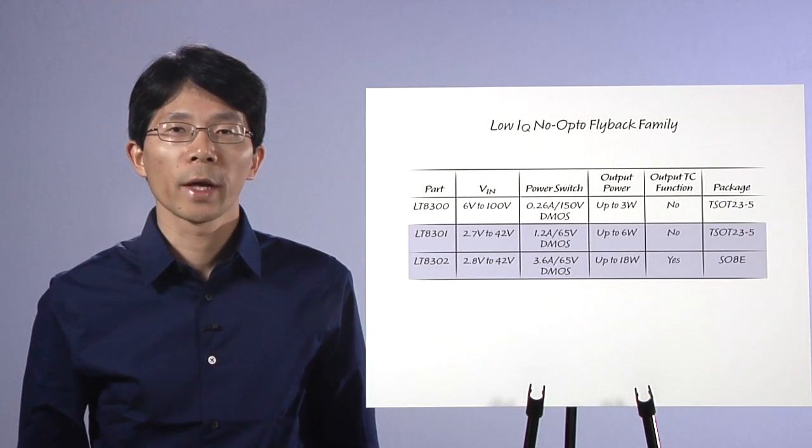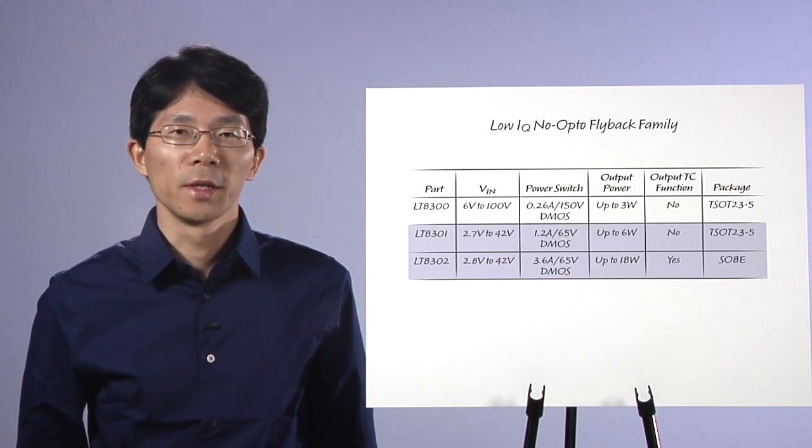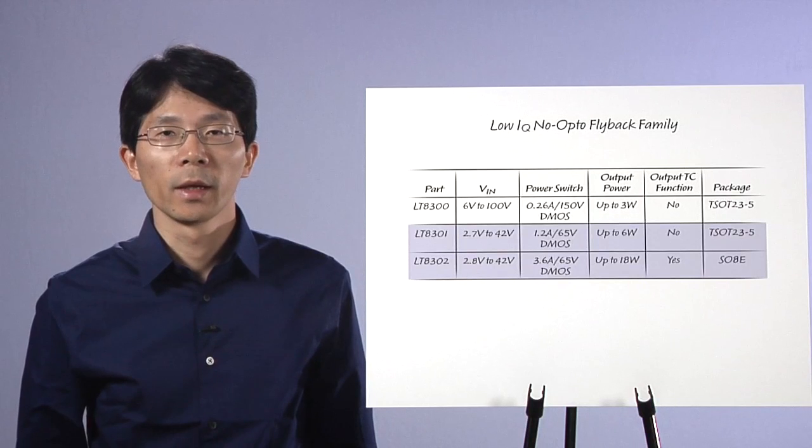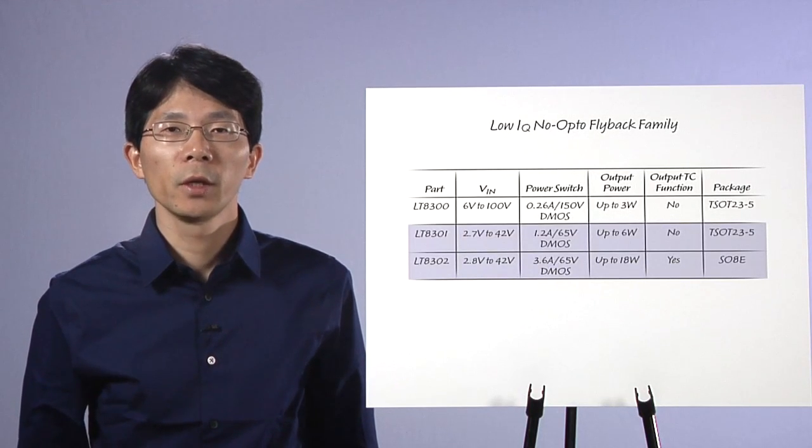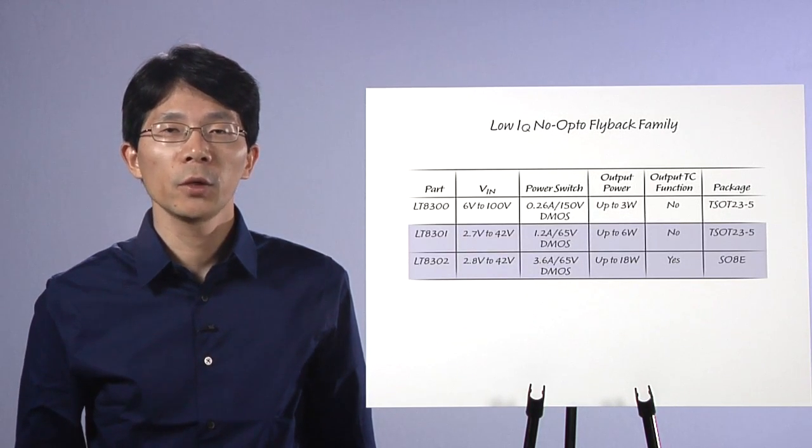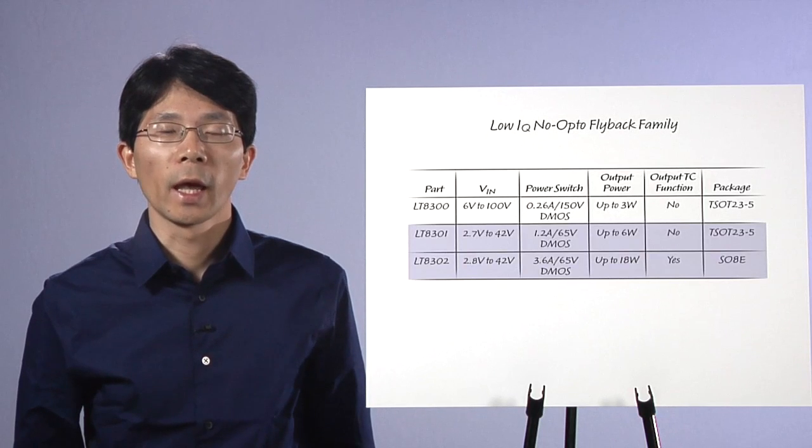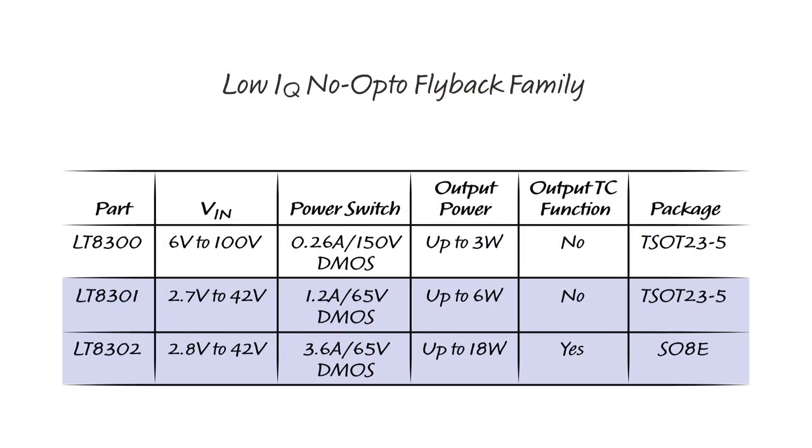This table summarizes our Low IQ No Opto Flyback family, including the recently introduced LT8301 and LT8302, both operating from an input voltage up to 42V. For example, the LT8301 and LT8302 can deliver isolated output power up to 6W and 18W, respectively.